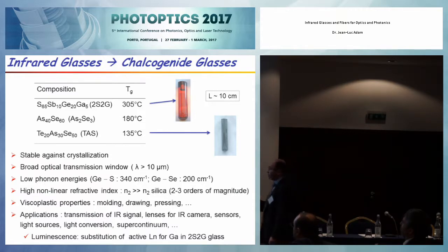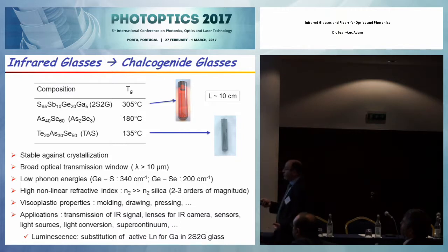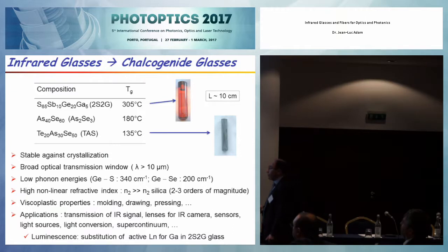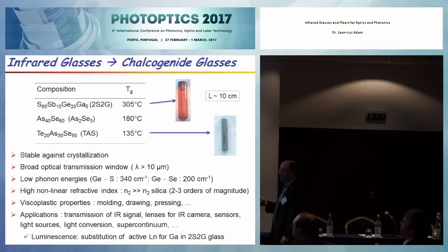What is particularly noticeable is the glass transition temperature — around 300 degrees for sulfide glasses, down to 200, even 135 degrees for tellurium- and selenium-containing glasses. So these are really low-temperature working glasses, especially compared to oxide glasses such as silica, where Tg is equal to 1,200 degrees — totally different material.